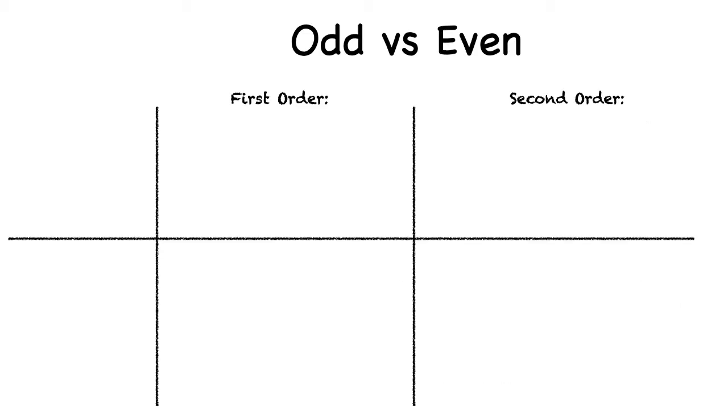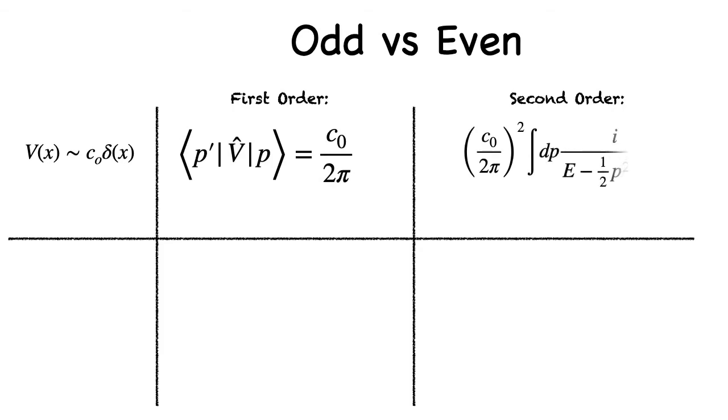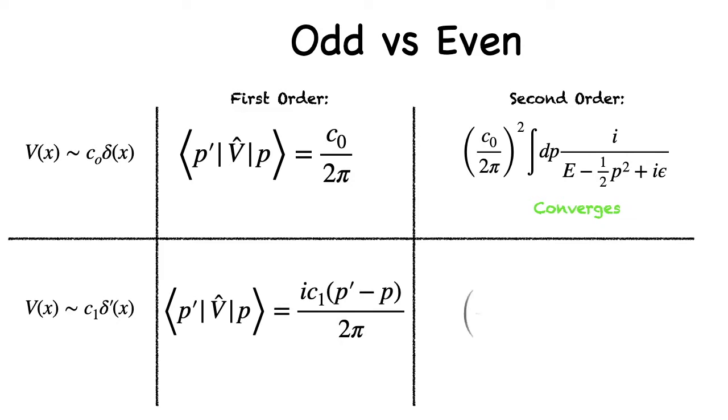So, now let's consider what happens when we have an approximation for an even short-range potential. The first-order contribution gives us a constant. Second-order contribution is an integral over momentum that converges. However, if we have an odd potential, the first-order contribution is momentum-dependent, and the second-order contribution diverges.